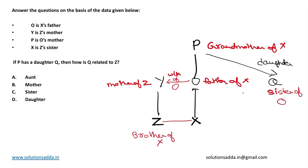And hence how is Q related to Z? So how is Q related to Z? O is father of X and therefore O is father of Z also, since X and Z are brother and sisters. And Q is sister of O, therefore Q is aunt of Z.